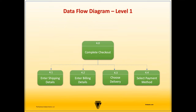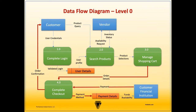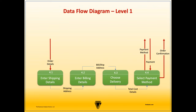Now let's look at a Level 1 diagram by exploding the Complete Checkout process from the Level 0 diagram into four sub-processes: Enter Shipping Details 4.1, Enter Billing Details 4.2, Choose Delivery 4.3, and Select Payment Method 4.4. We can omit external entities since we're taking a more detailed view. A Level 1 diagram must be balanced with Level 0, so all input and output data flows from the Complete Checkout process must be included: Order Details, a Payment Input, a Payment Method Output, and the Order Confirmation Output.